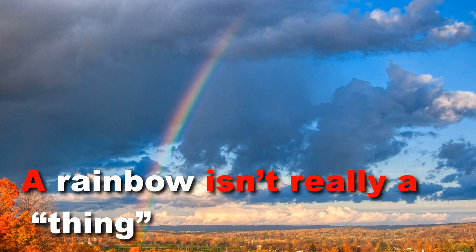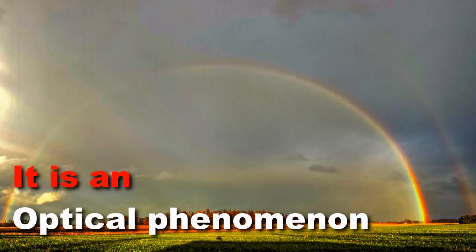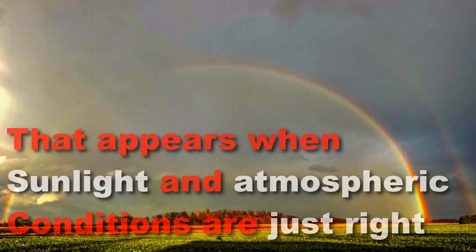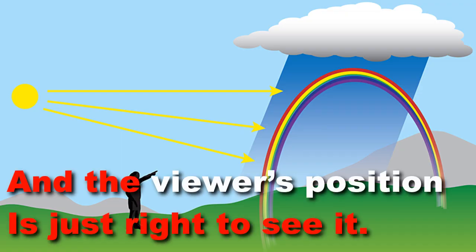A rainbow isn't really a thing and it doesn't exist in a particular place. It is an optical phenomenon that appears when sunlight and atmospheric conditions are just right, and the viewer's position is just right to see it.